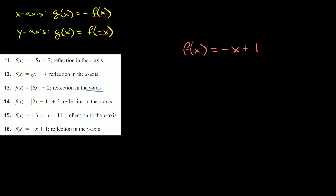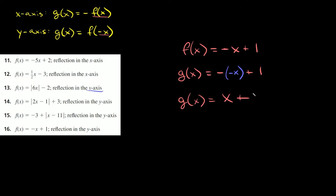Skipping 15, let's do 16: f of x equals negative x plus one, again reflected in the y-axis. Wherever we have an x we attach a negative symbol. So g of x equals negative negative x plus one. A negative times a negative is a positive, so we get g of x equals positive x plus one.